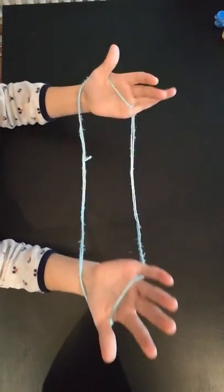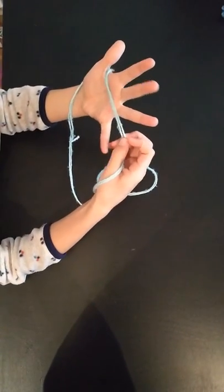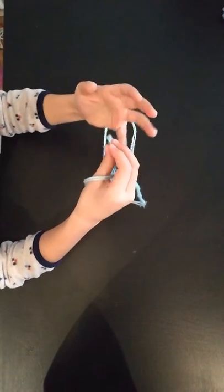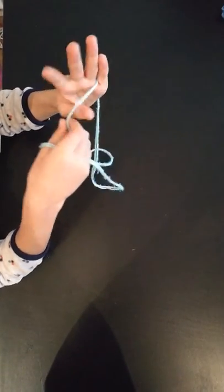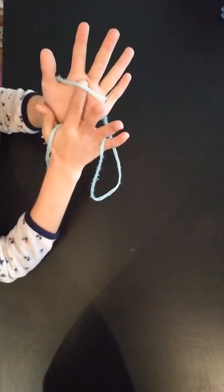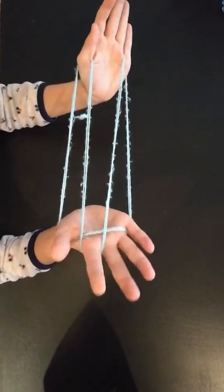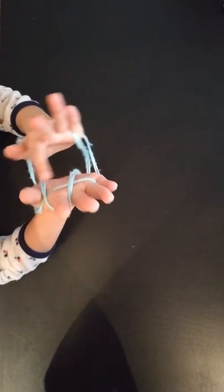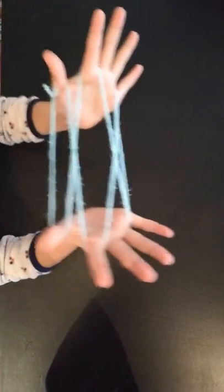First, you start with the string over the pinky and the thumb. Then you take your pointer finger and take the string on the palm to make open A.